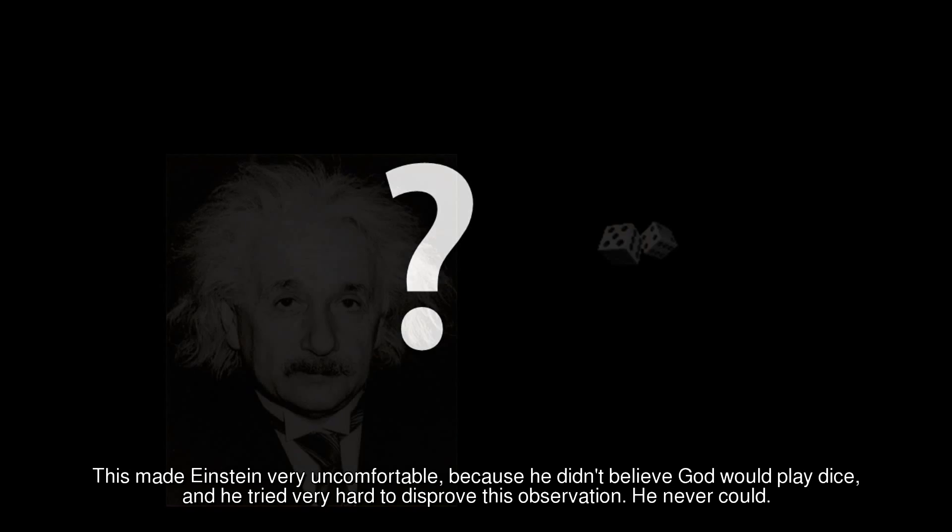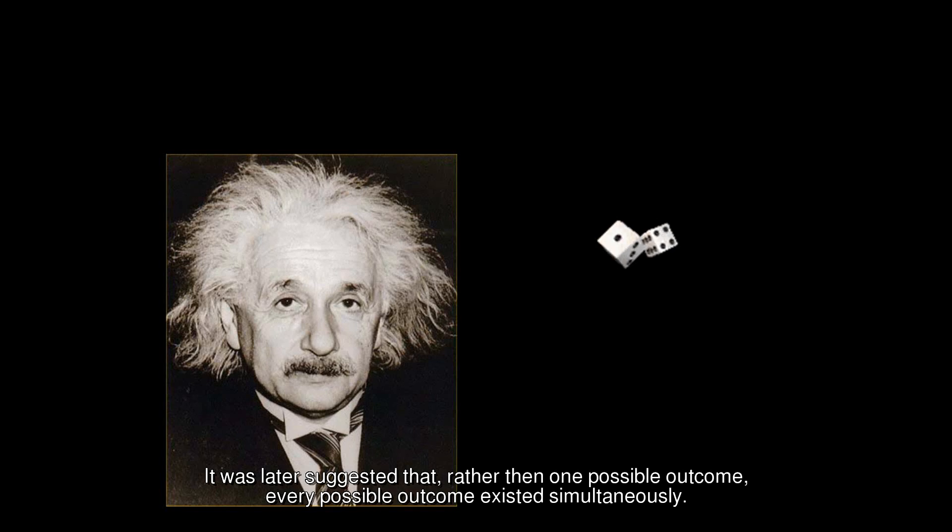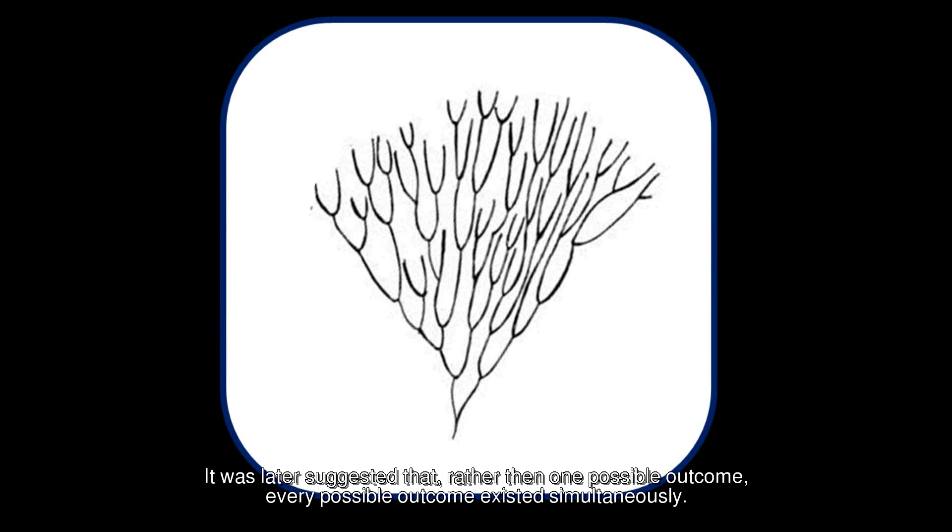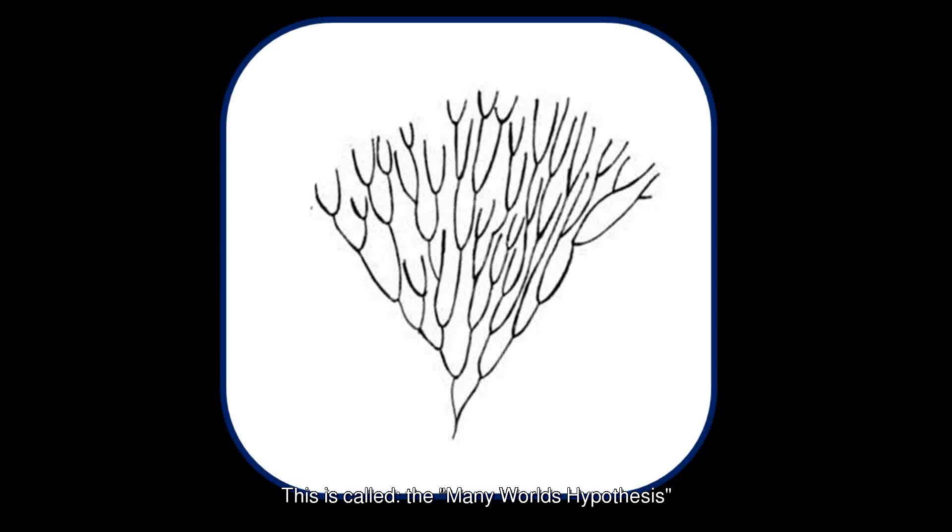This made Einstein very uncomfortable, because he didn't believe God would play dice. And he tried very hard to disprove this observation. He never could. It was later suggested that, rather than one possible outcome, every possible outcome existed simultaneously. At the moment of measurement, this outcome branches off into a new timeline based upon this measurement.